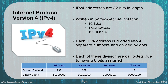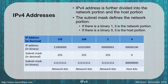This is why we use decimal when we write it, but the computers understand it as binary. IPv4 addresses are further divided into what we call the network portion and the host portion. The subnet mask is what helps us define what is the network portion and what is the host portion.